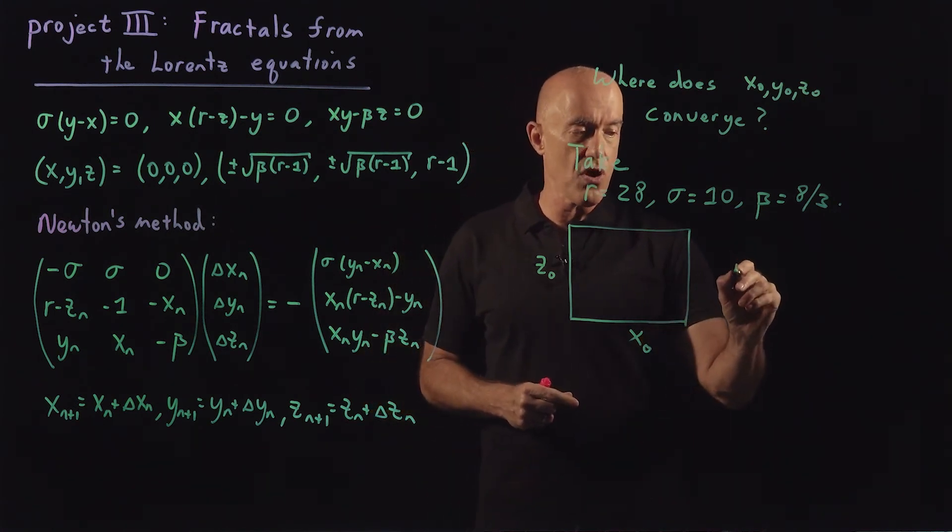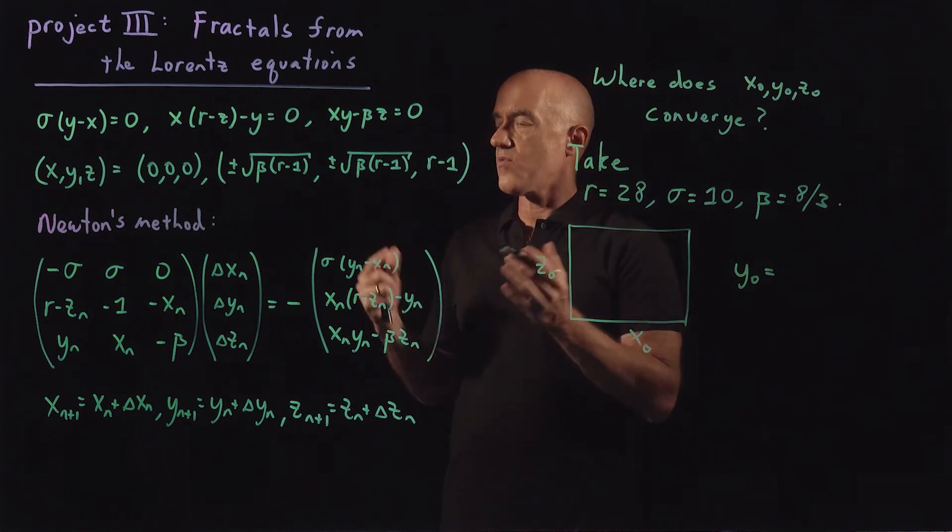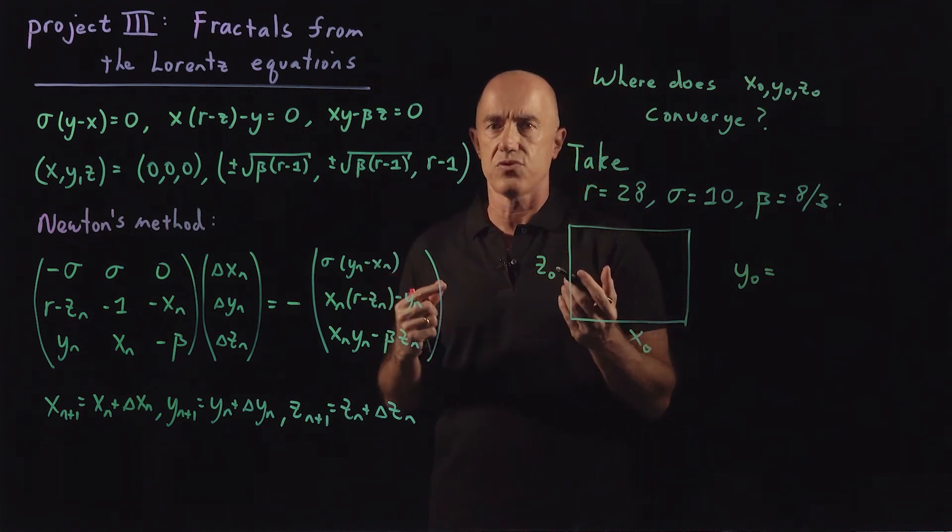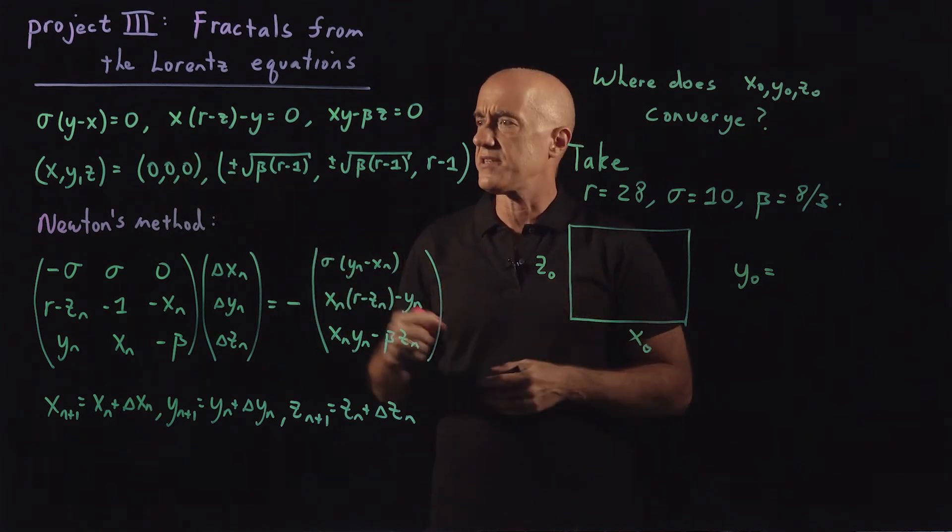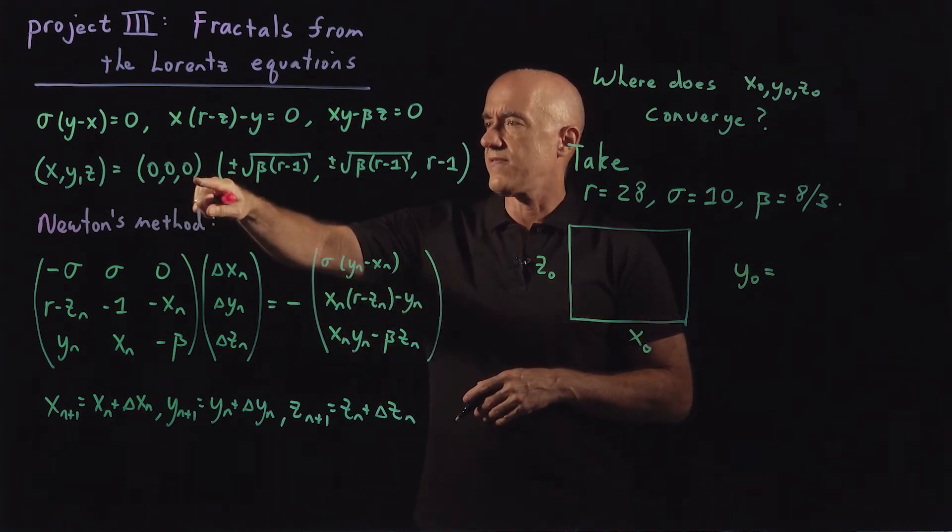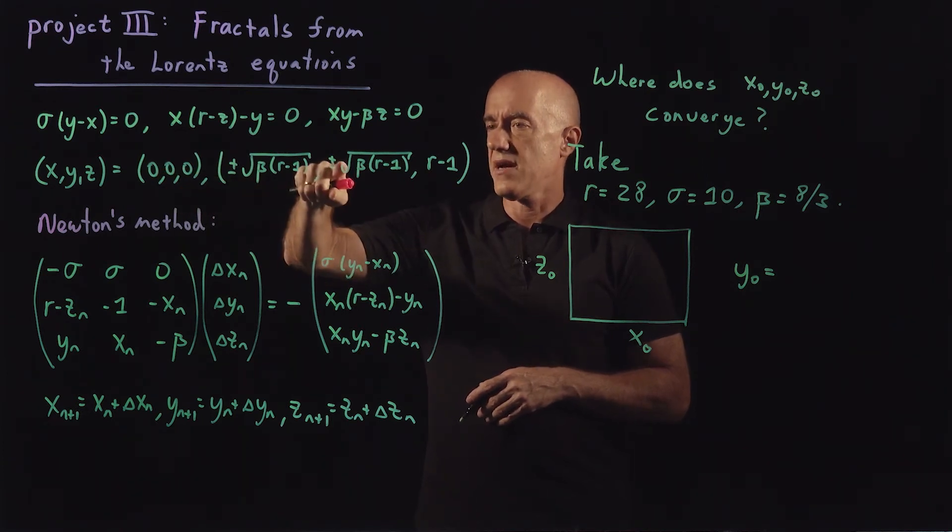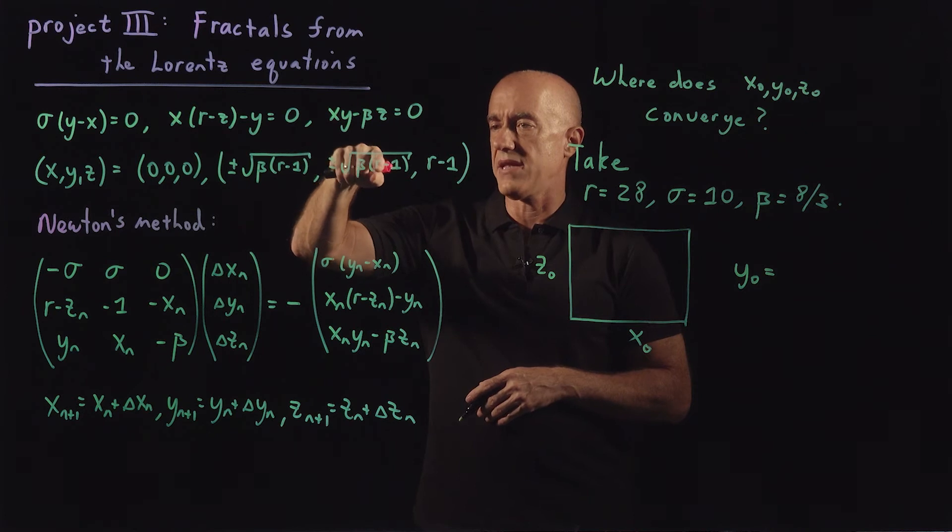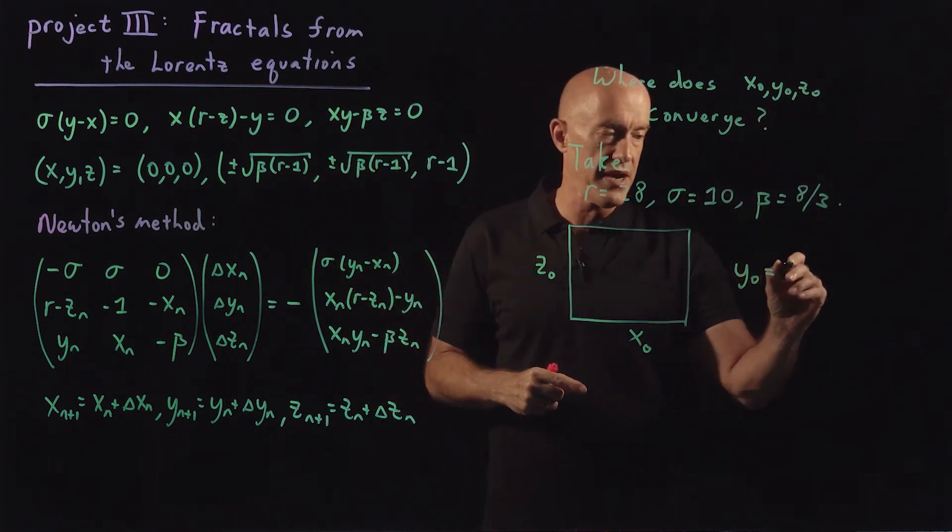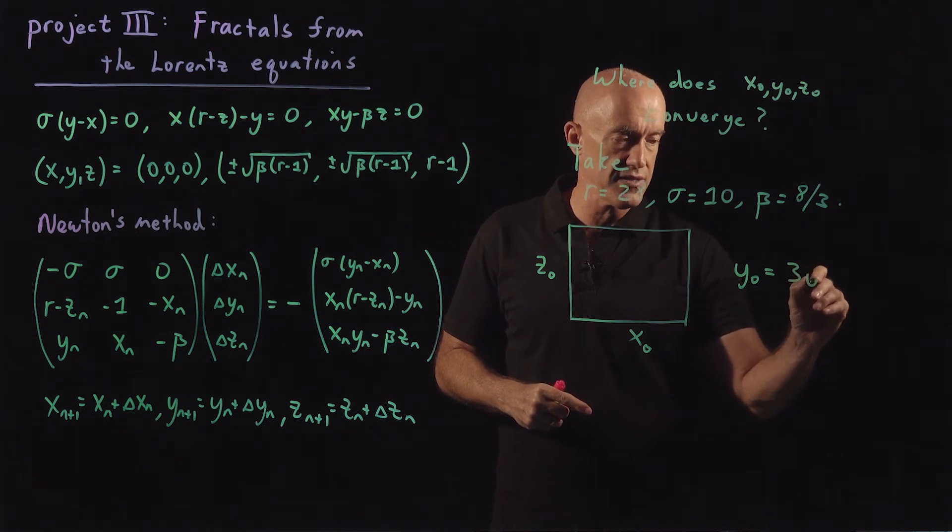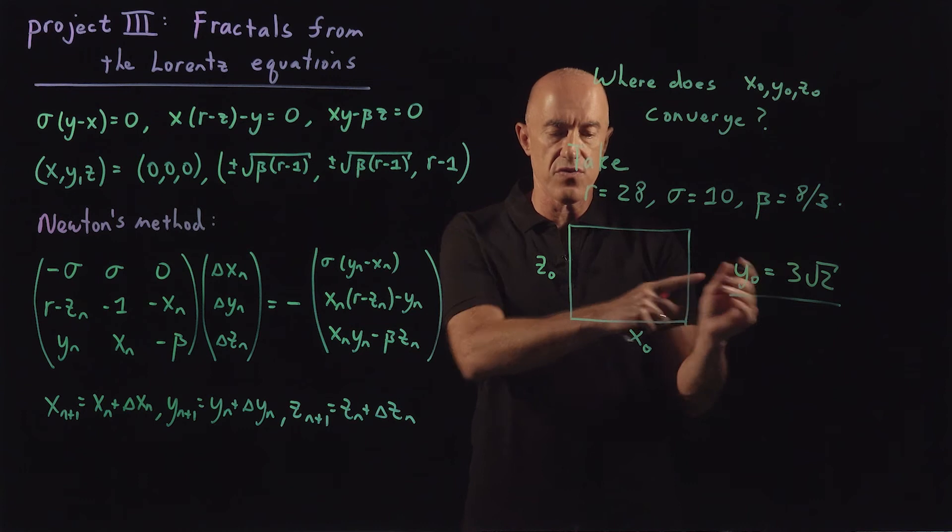And then we always choose the same initial value for y. Which initial value do we choose? I found that you get the nicest fractal if you choose a value midway between 0 and plus square root of beta times r minus 1. If you plug in these values here, you'll see that midway, it's 3 times square root of 2. So we'll fix the value of y naught.